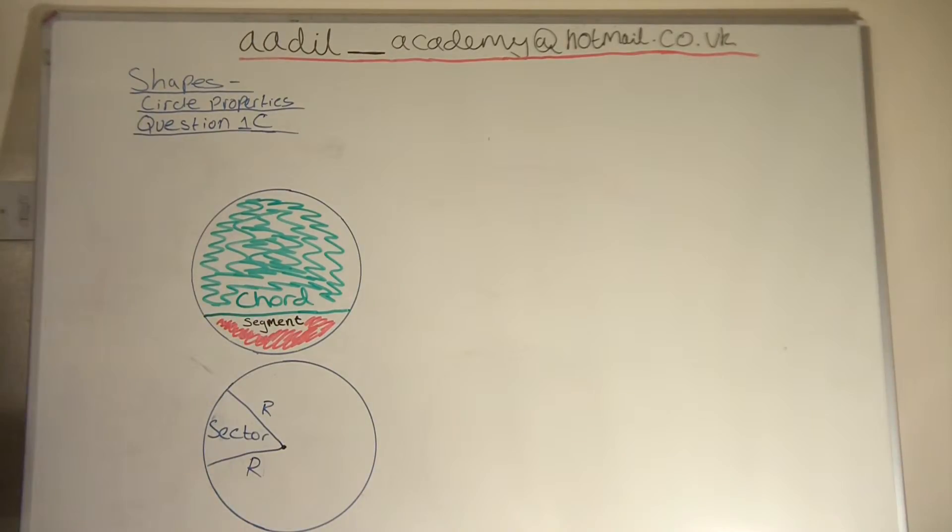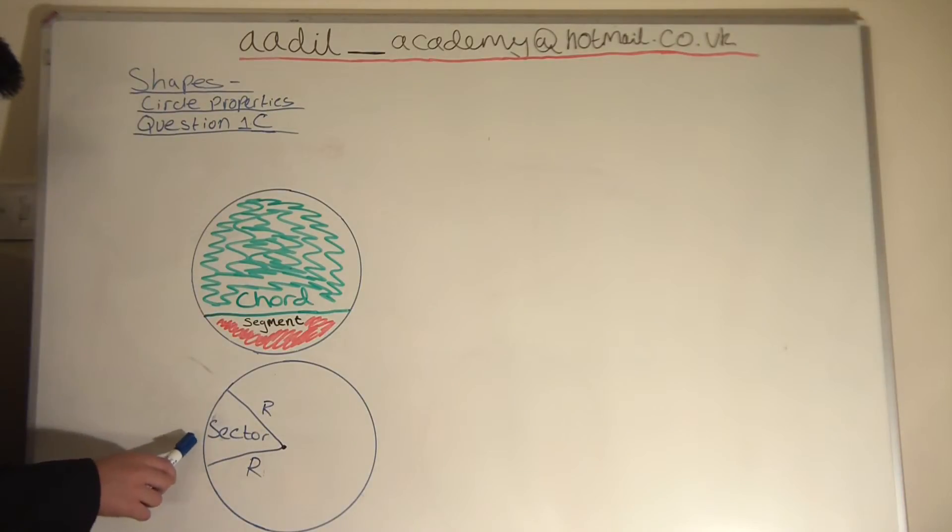And the second thing we are looking at is a sector. A sector is two radii divide a circle into two sectors. So two radii divide a sector into two sectors.